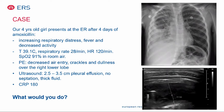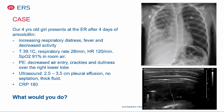To come back to our four-year-old girl — she presents at the ER after four days on oral amoxicillin with increasing respiratory rate, fever, and decreased activity. She has a high fever, oxygen saturation of 91% in room air, decreased air entry, crackles, and dullness over the right lower lobe. Chest X-ray shows a consolidation in the right lower lobe with the impression of pleural fluid, confirmed by ultrasound as a 2.5 to 3.5 centimeter thick pleural effusion without septation. Her CRP is 180. What would be your treatment?